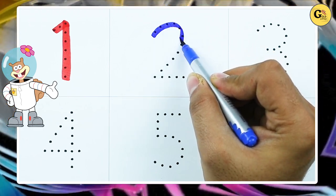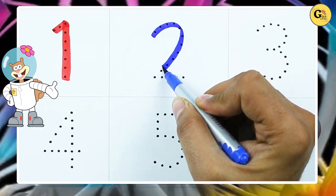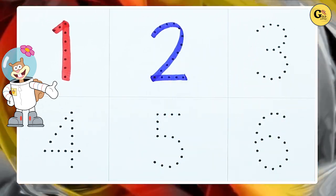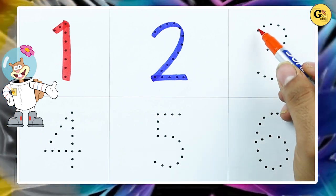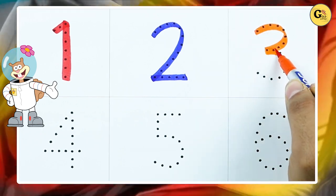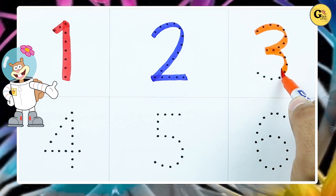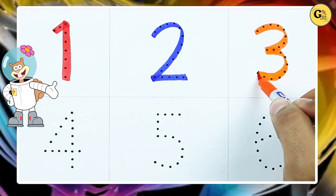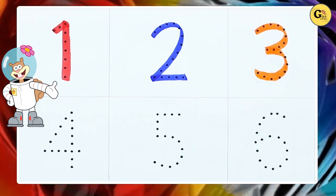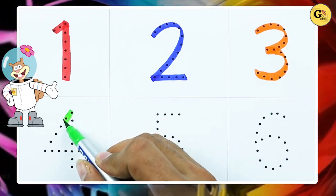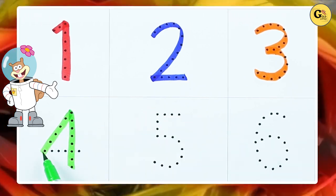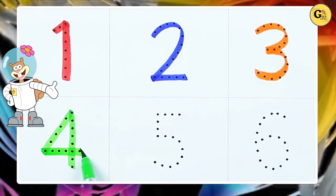It's 2 with blue color. It's number 3, yes, 3 is with orange color. It's number 4 with green color.